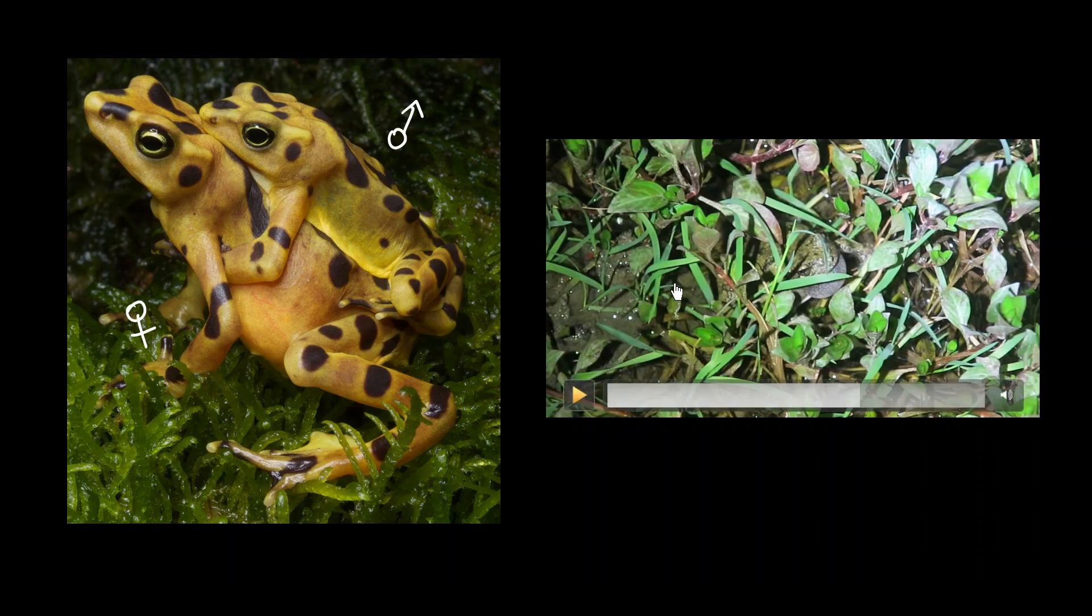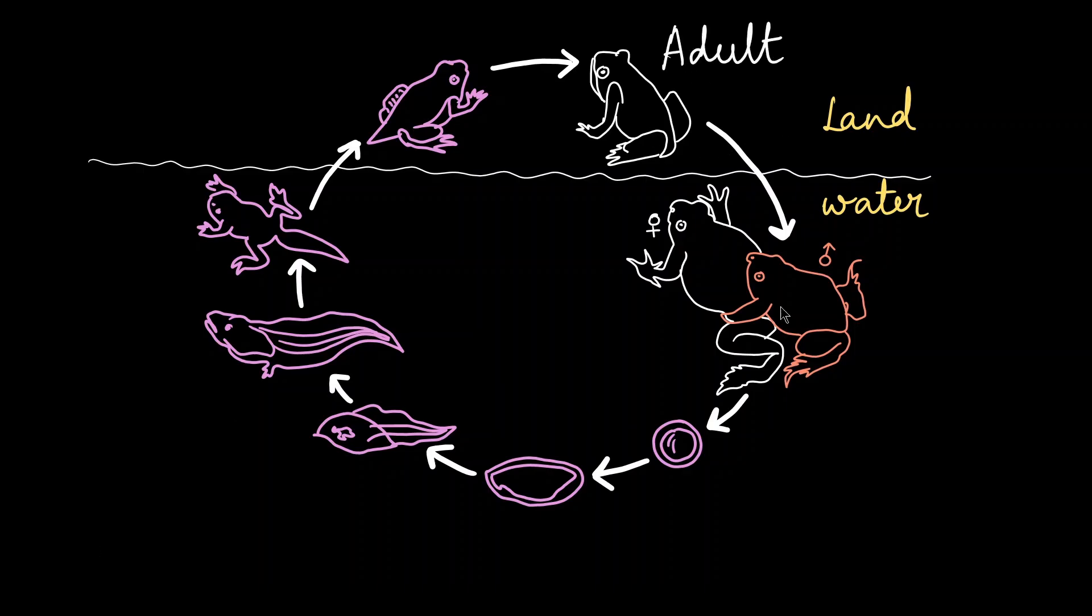The adults mostly live on land. We have already seen that, right? But they return to fresh water for reproduction. The adult frog lives on the land. So we have a female and a male and you already saw how the male had mounted onto a female, right? So after the mating process they release millions of sperms and ovums.